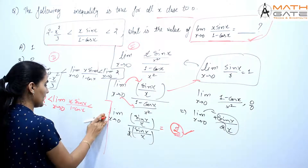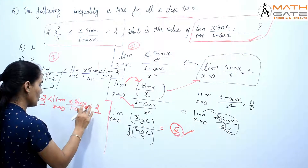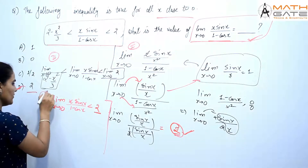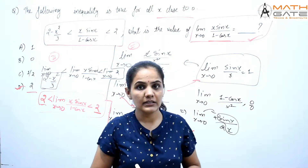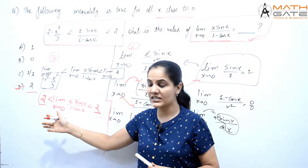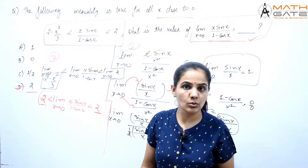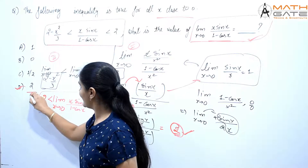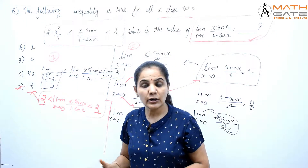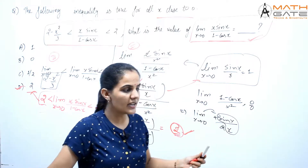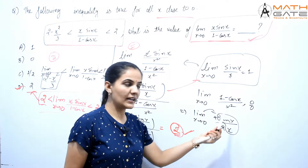We can directly evaluate the limits: limit x tends to 0 of (2 - x²/3) = 2, and limit x tends to 0 of 2 = 2. Since the middle quantity lies between 2 and 2, by the Squeeze Theorem, limit x tends to 0 of x·sin(x)/(1 - cos(x)) = 2. This is the second approach. Both methods — direct limit with L'Hôpital and the Squeeze Theorem using the inequality — give the answer 2.